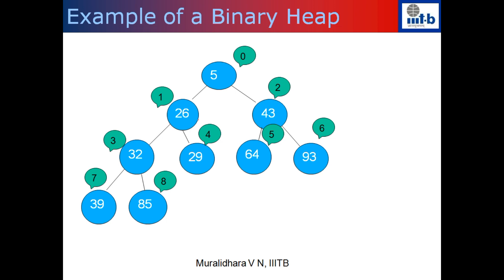Let's look at an example. We have to ensure it is a complete binary tree and also that it satisfies the heap property at every node. You can check that 5 is smaller than 26 and 43; 26 is smaller than 32 and 29; 32 is smaller than 39 and 85; and in the leaf nodes the heap property is satisfied trivially because they have no children. So 43 is smaller than 64 and 93.